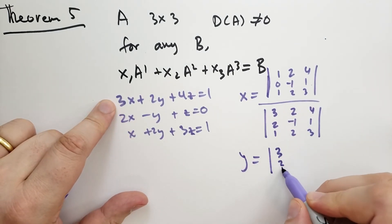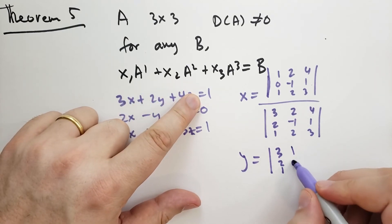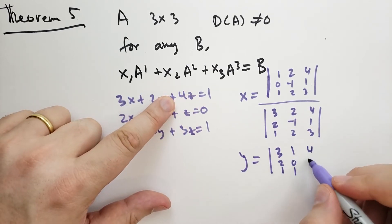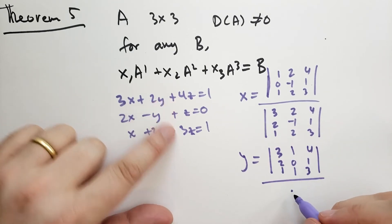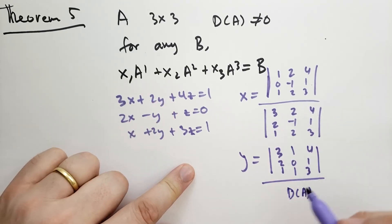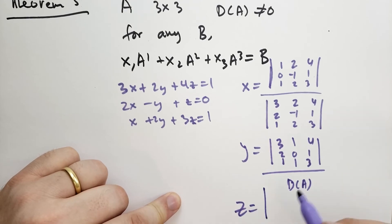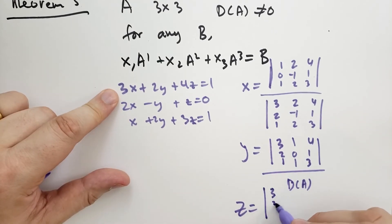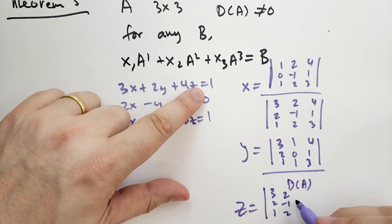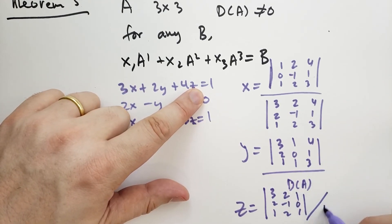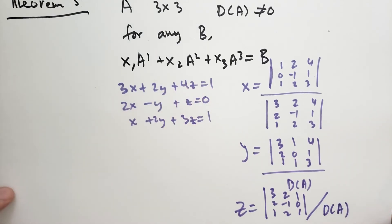Y equals the determinant (3, 2, 1, 1, 0, 1, 4, 1, 3) divided by the determinant of A. And finally, Z equals the determinant (3, 2, 1, 2, -1, 2, 1, 0, 1) divided by the determinant of A. So that's the solution. Do we want to actually solve these determinants? No, I don't want to do it.